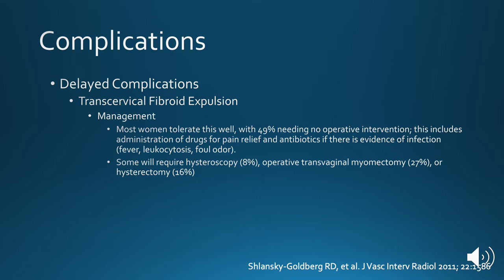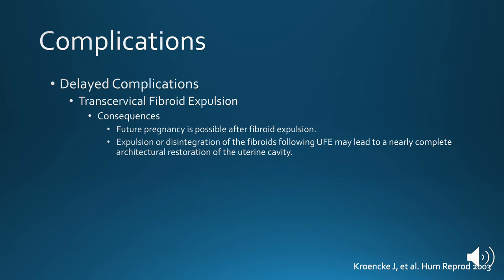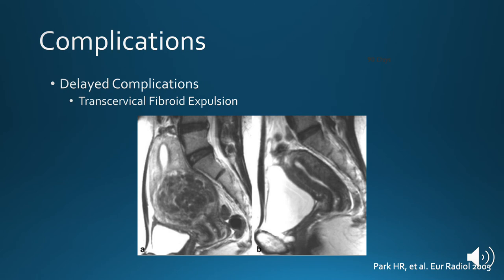Fortunately, most women tolerate this well, with about half needing no operative intervention. Conservative strategies include administering drugs for pain relief and antibiotics if there's evidence of infection, such as a fever, increased white count, or a foul odor. Unfortunately, some will require a GYN procedure to address this, including hysteroscopy, a transvaginal myomectomy, or hysterectomy. The good news is that future pregnancy is possible after fibroid expulsion, and that expulsion or disintegration of the fibroids following embolization may lead to nearly complete architectural restoration of the uterine cavity, as shown in images from an article by Park in 2005.